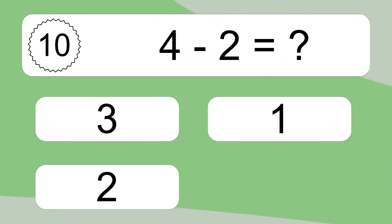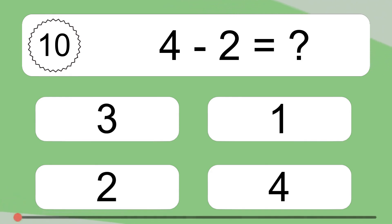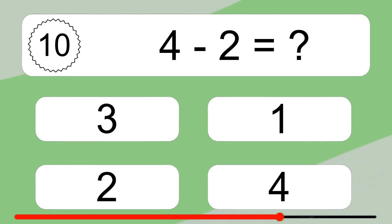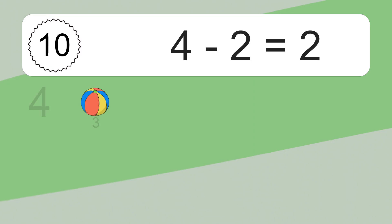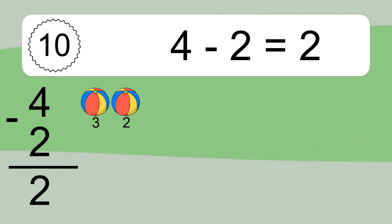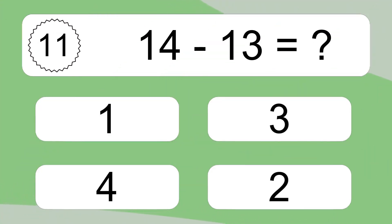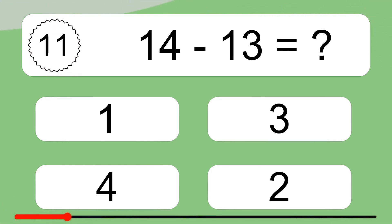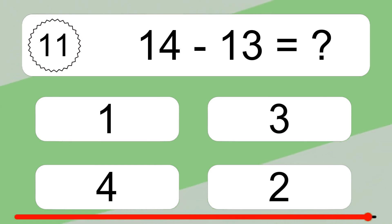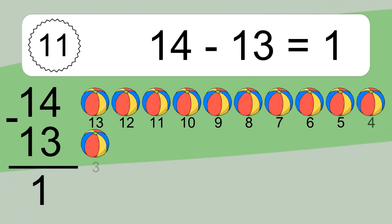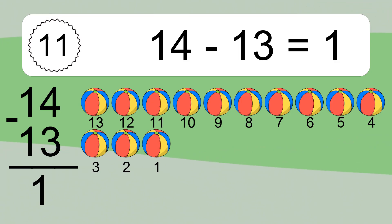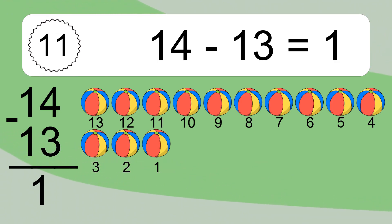4 minus 2 equals what? 4 minus 2 equals 2. Let's count it: 3, 2. 14 minus 13 equals what? 14 minus 13 equals 1. Let's count it: 13, 12, 11, 10, 9, 8, 7, 6, 5, 4, 3, 2, 1.